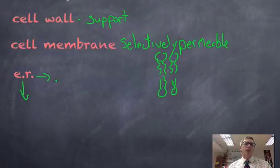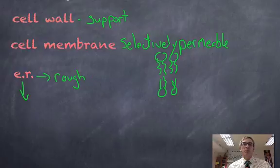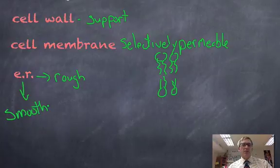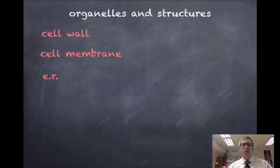The endoplasmic reticulum, or ER, there can be both a rough that's covered with ribosomes, so proteins are being exported or made there. There's also a smooth ER that is lacking the ribosomes, primarily functions to detoxify poisons.